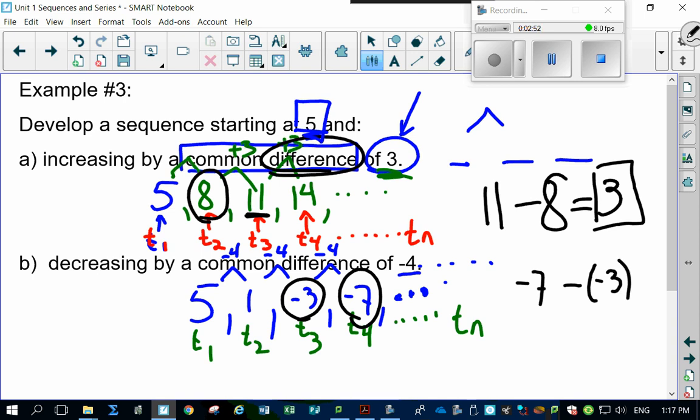So negative 7 minus a negative 3, which works out to be negative 7 plus 3, which of course is negative 4. That's the common difference right there. And that's the term that allows you to bounce from one term to the next term to the next term to the next term. More to come.